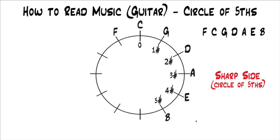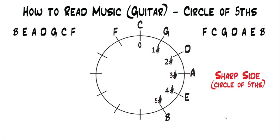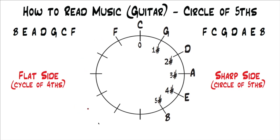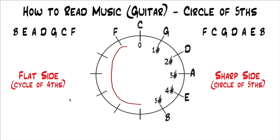Now we need to take another group of letters to fill out the other side, which is called the flat side because these are the keys with flats in them. Those letters are B, E, A, D, G, C, F. You can use the mnemonic 'Battles In And Down Goes Charles' Father,' which reverses the sharp mnemonic. Some people just memorize that the first four letters spell BEAD and then memorize G, C, F after it. This flat side is often referred to as the cycle of fours.